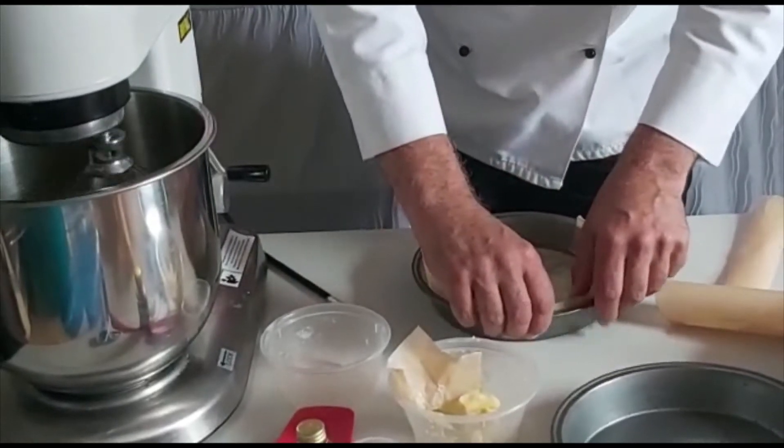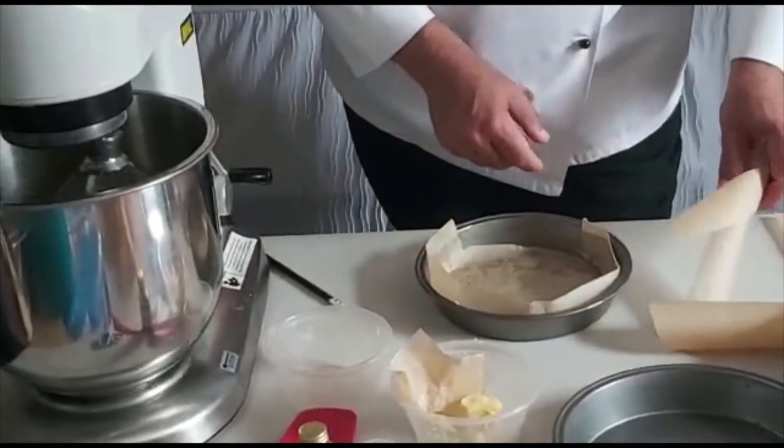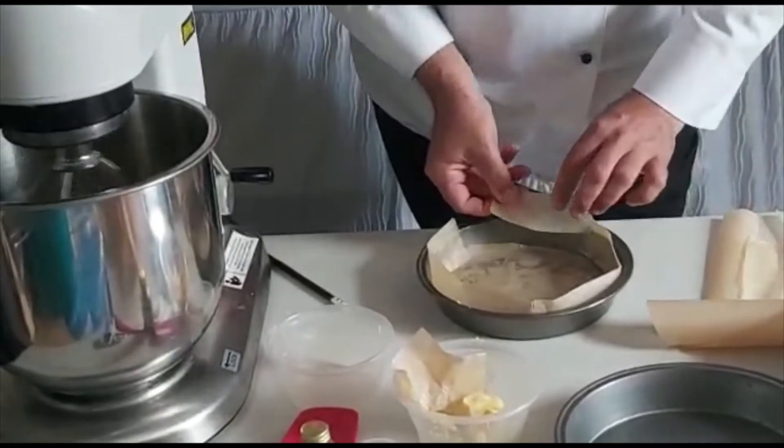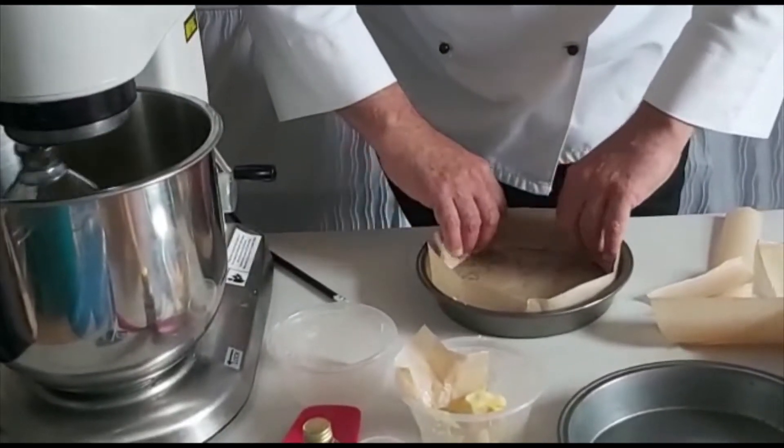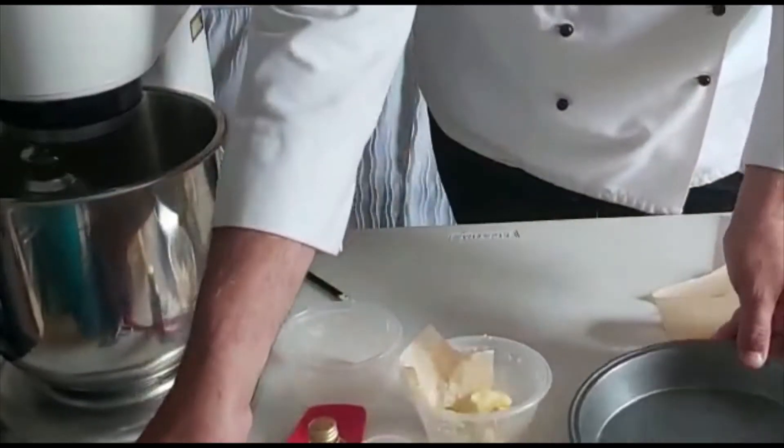And this will help it stop sticking and also will help the paper to stick to the tin. You can see that right there. Now for the strips. Do those go around the outside. If you haven't got any grease-proof paper, no big deal.